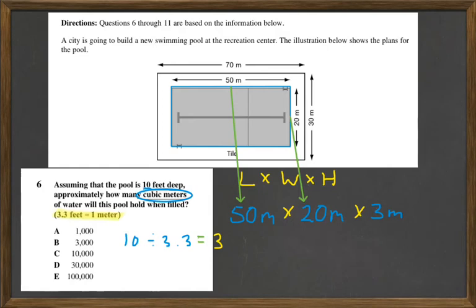Let's plug that into our formula. And 50 times 20 is 1,000 meters. And then multiply that by 3, and that equals 3,000 cubic meters. The answer would be B.